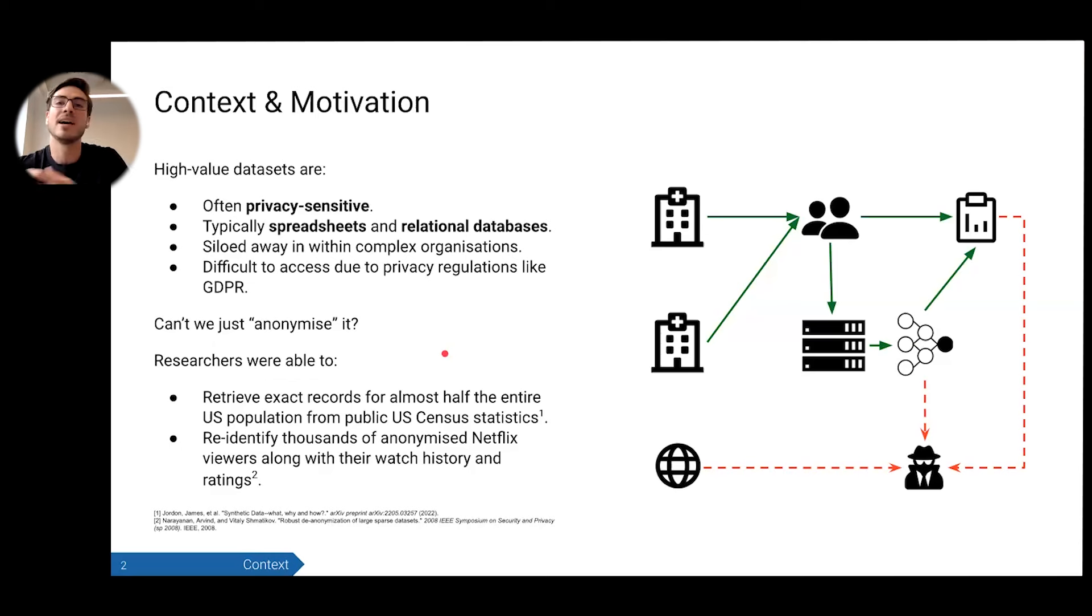The answer is no, because higher dimensional data becomes very sparse, and our machine learning tools are really powerful. There's lots of examples of researchers recovering exact records and re-identifying individuals along with their personal data. This was done for half of the U.S. population from census statistics. The famous Netflix challenge had anonymized data, and researchers were able to re-identify viewers along with their watch history and ratings. So anonymization alone isn't enough.